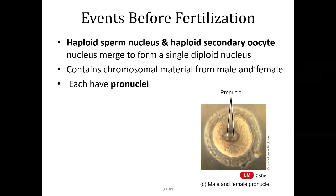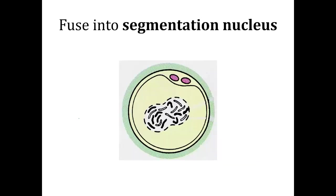Before fertilization, your haploid sperm and haploid oocyte — because meiosis II has occurred — merge to form a single diploid nucleus. This is what we call a zygote. But before those two nuclei fully form, there are what we call pronuclei, and they fuse together to form one big nucleus. The nuclear membranes merge together, and then you have chromosome mixing in the formation of one.